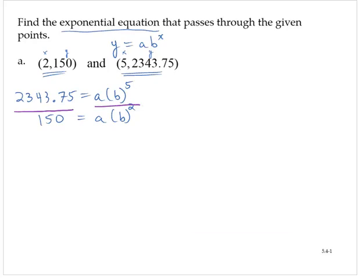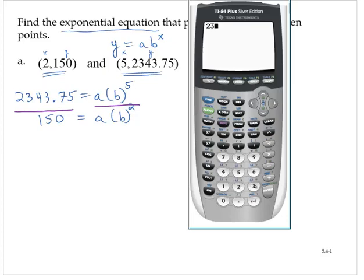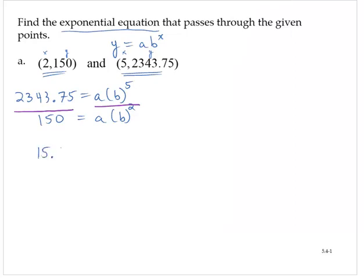Dividing the left-hand sides, 2343.75 divided by 150 is 15.625. On the right-hand side, a divided by a is 1. b to the fifth divided by b to the second, if you remember your rules for exponents, that would be b to the 5 minus 2 is 3. So we have b to the third equals 15.625.